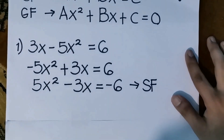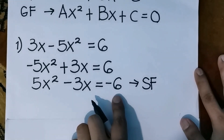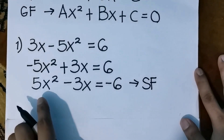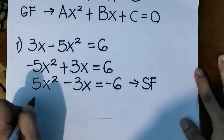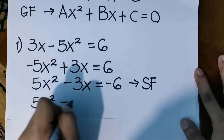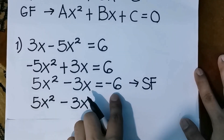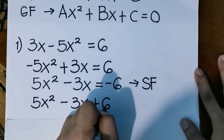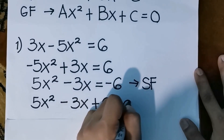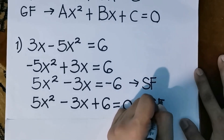How about the general form? It should be in the form of ax squared plus bx plus c equals to 0. We move the constant, which is negative 6, to the left side, and it should be equal to 0. The additive inverse of negative 6 is positive 6, so it becomes 5x squared minus 3x plus 6 equals 0. That will be the general form.